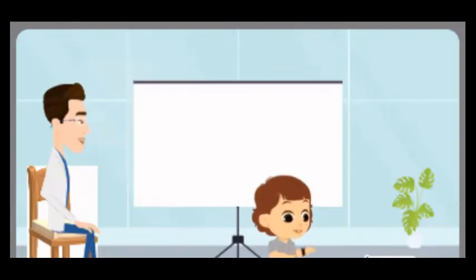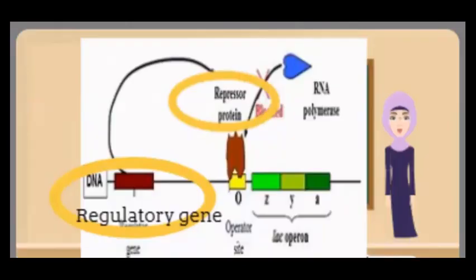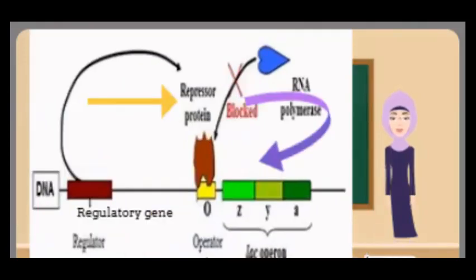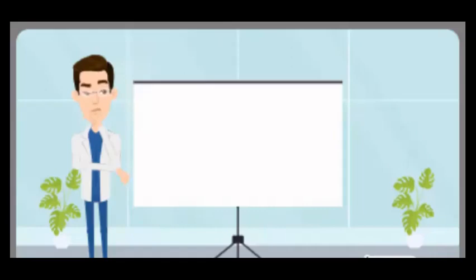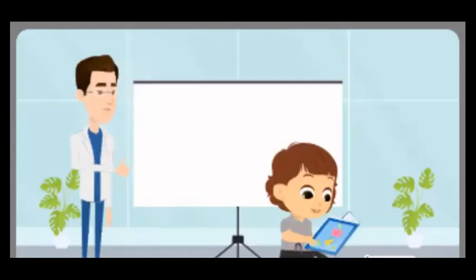And what about regulatory genes? What's their role? Regulatory genes code for repressor proteins in prokaryotes. These proteins control the expression of structural genes. The regulatory sequences are located kilobases away from the initiation site of transcription, and they can activate or repress the expression of specific genes. So regulatory genes essentially play a role in controlling when and how the structural genes are expressed.